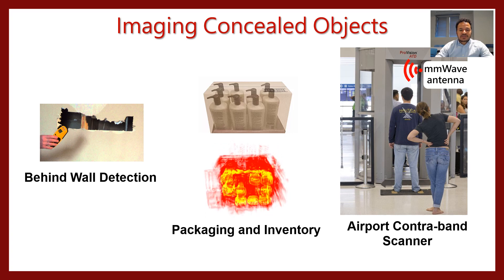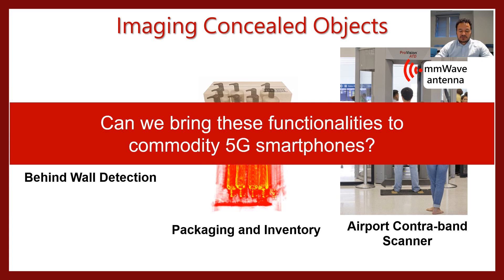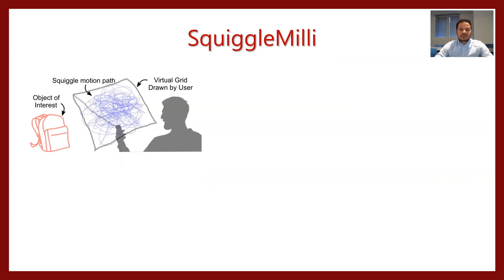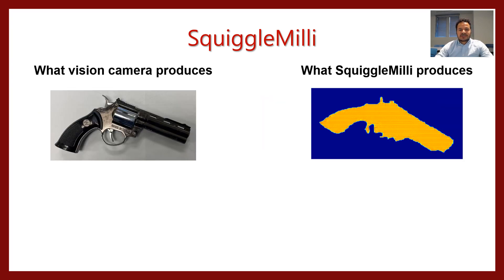Our question is: can you bring these functions to commodity 5G smartphones that have Millimeter Wave technology? This is where our paper is focused — we would like to think about pulling out a smartphone, scanning over some object of interest, and having it show us what object is inside.